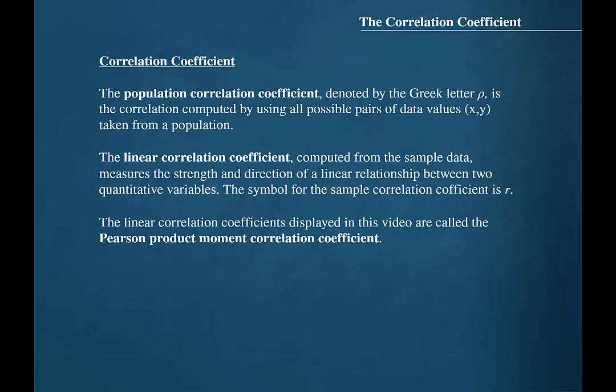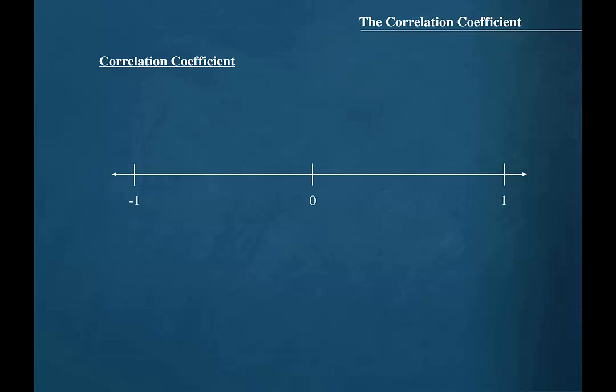The linear correlation coefficients discussed in this video are called the Pearson product moment correlation coefficient. The linear correlation coefficient ranges between the values of negative 1 and 1.